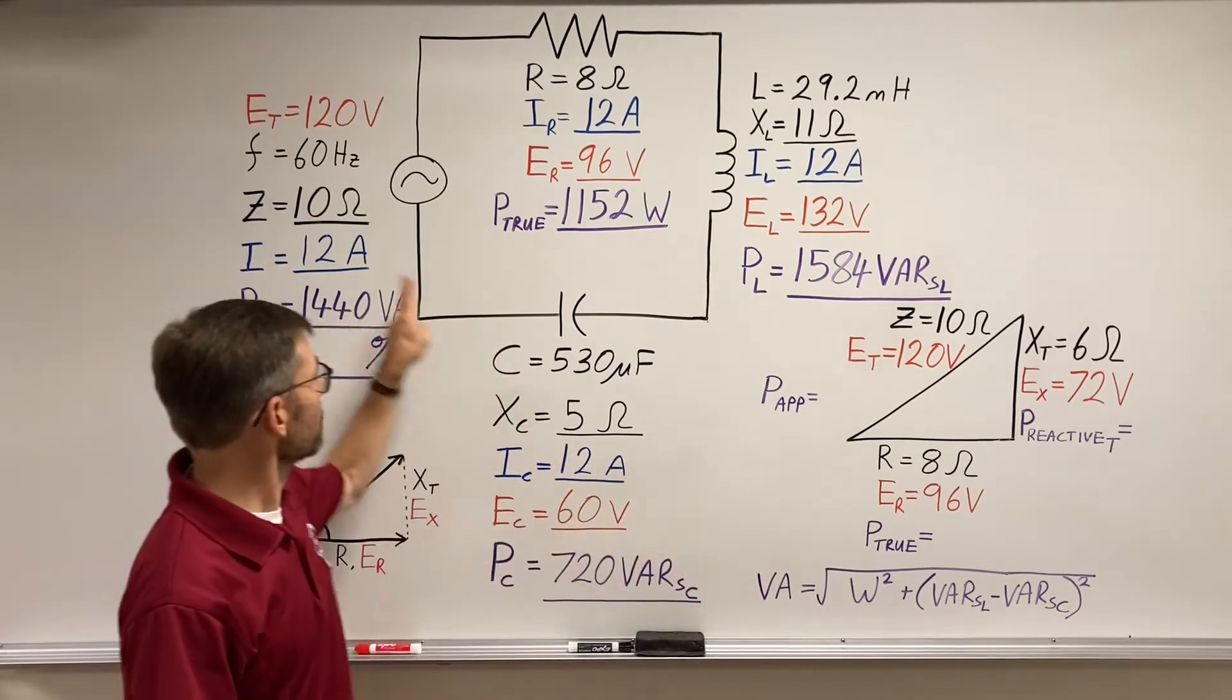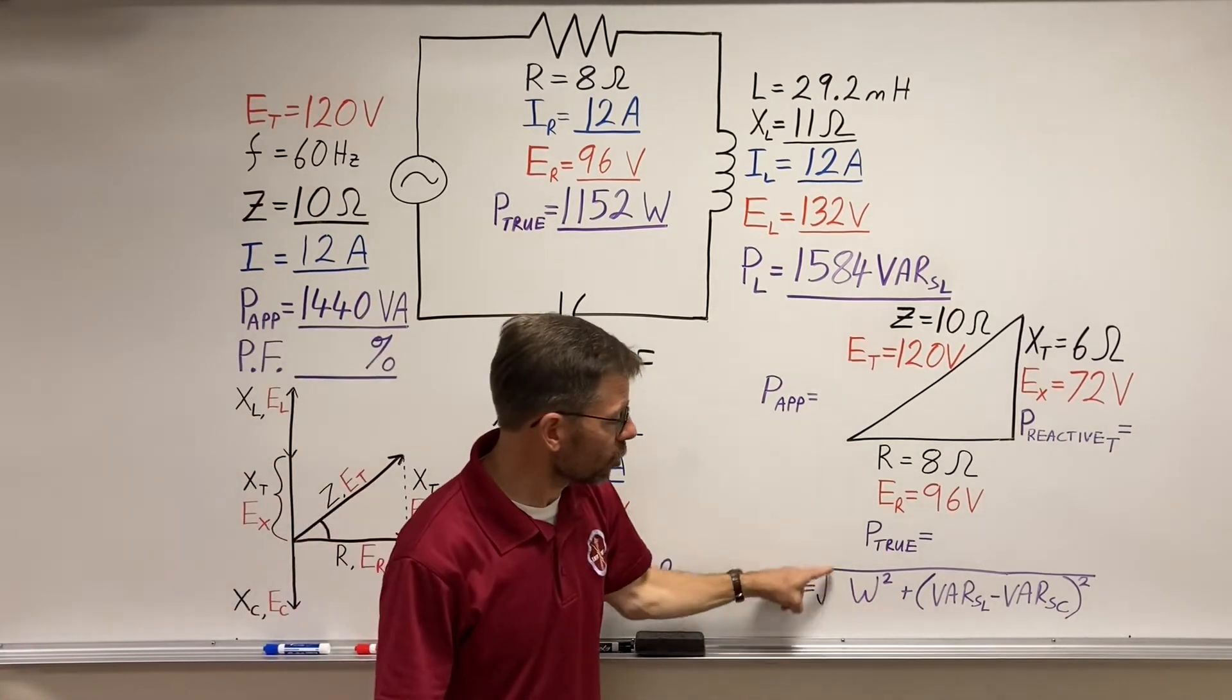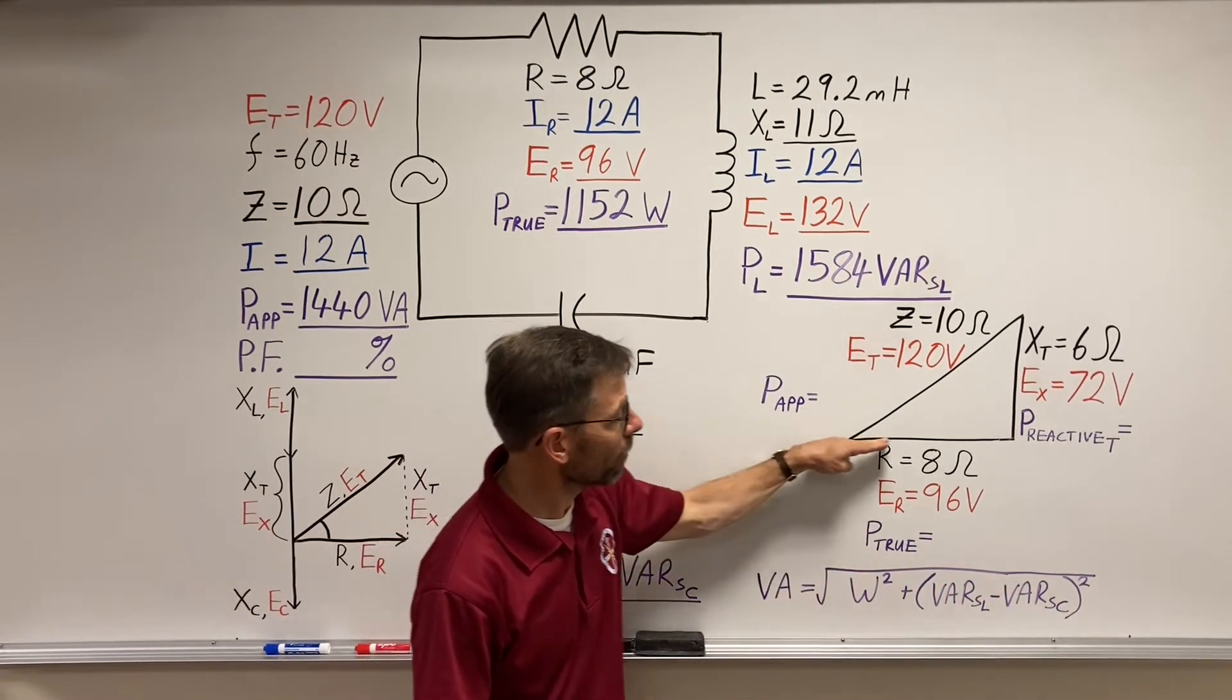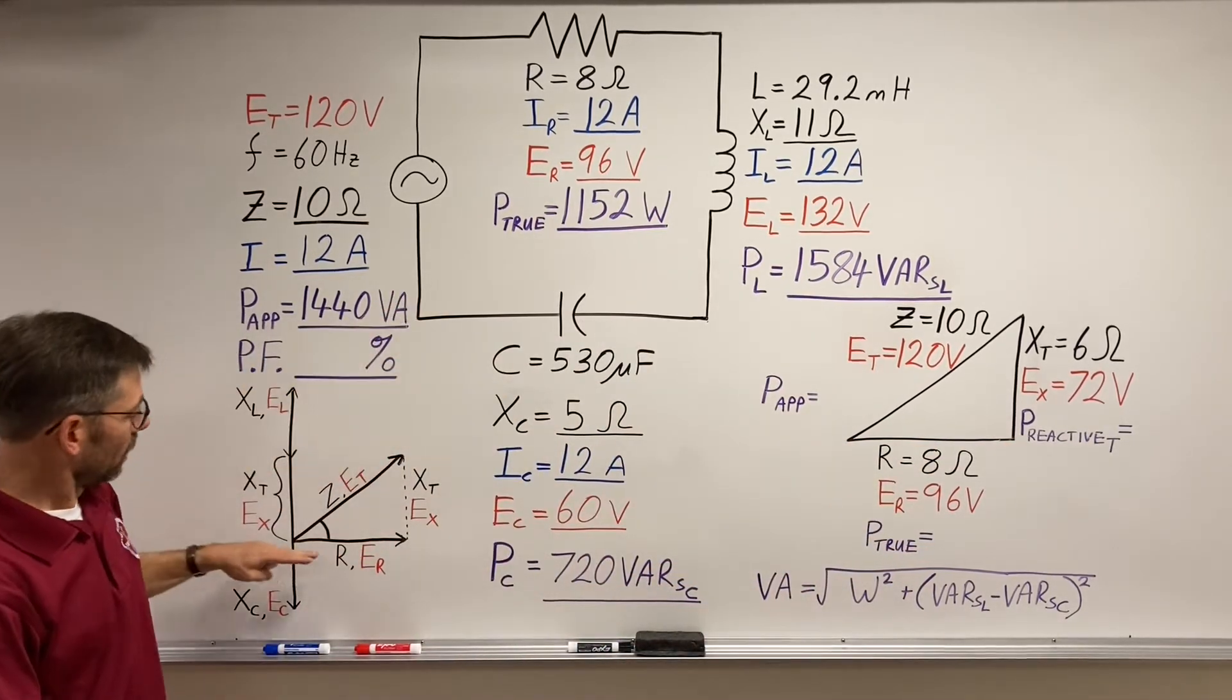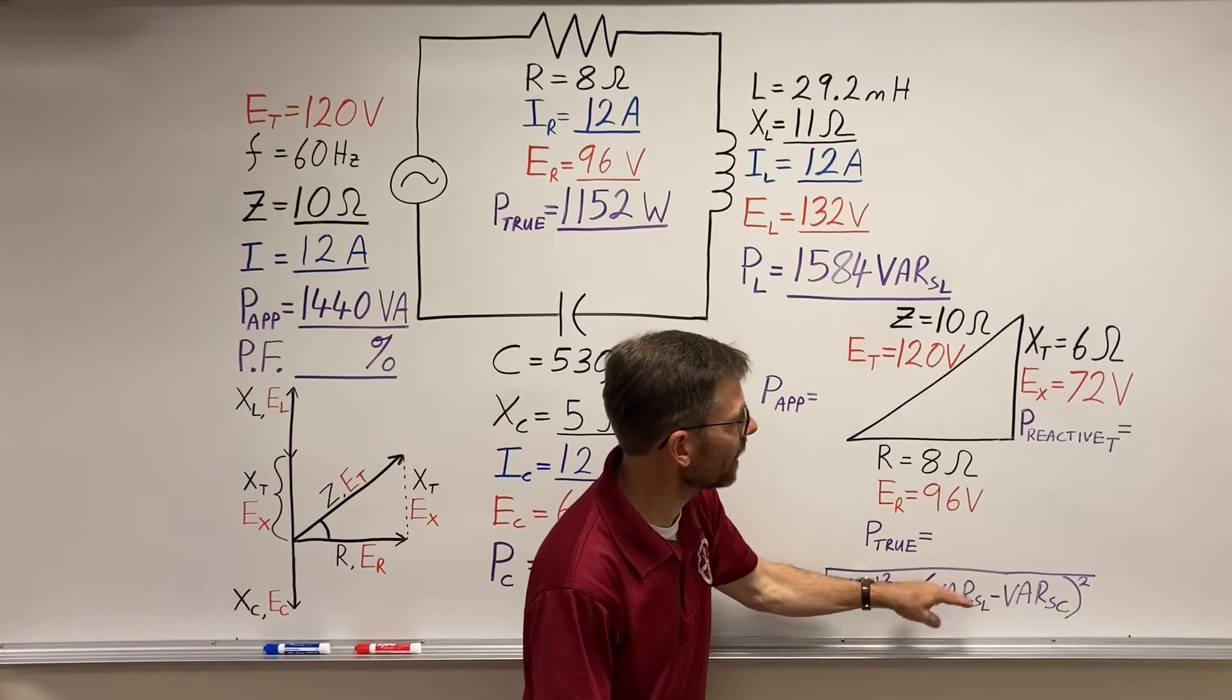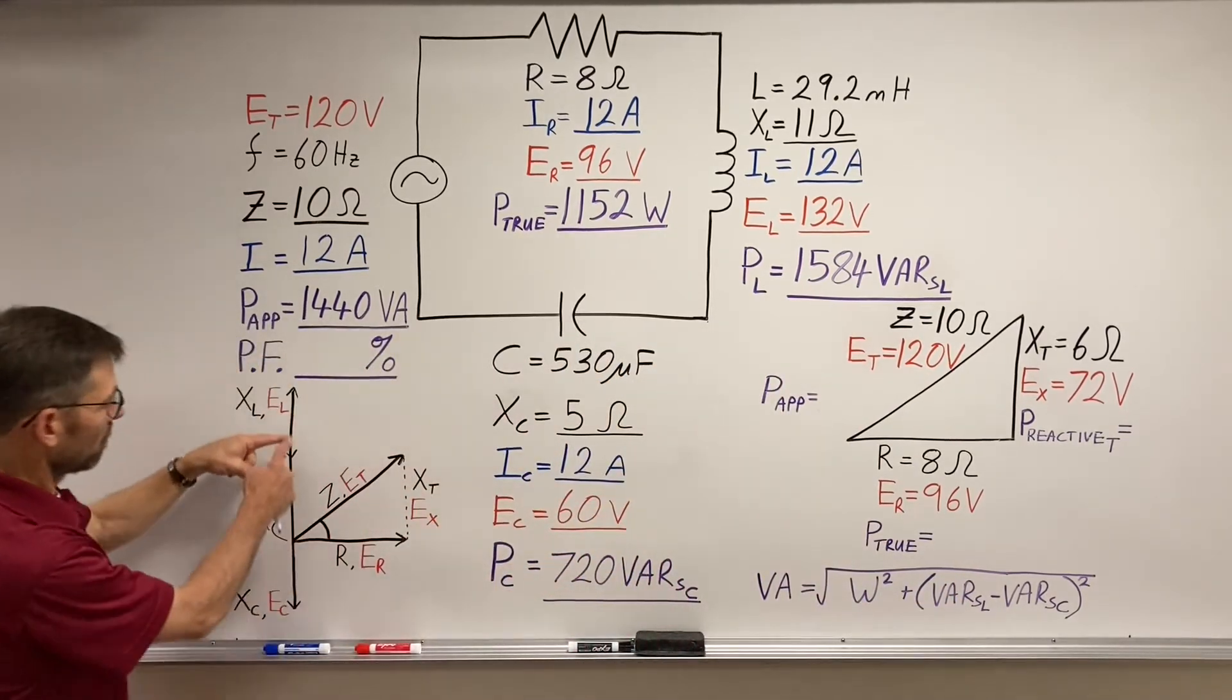But I wrote it only in one way. I wrote the volt-amps, the total circuit power, is going to be the square root of, again it's really Pythagoras, square root of the watts squared. It's my resistive power, which we'll calculate here, we already did that. My resistive power squared, plus the difference between the inductive and the capacitive. We did that here.